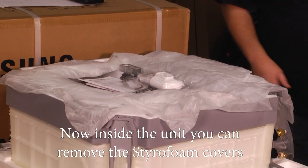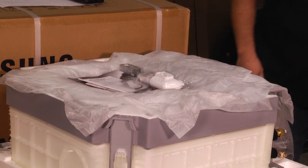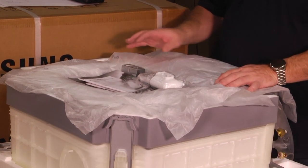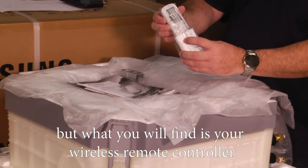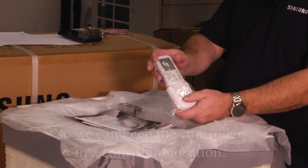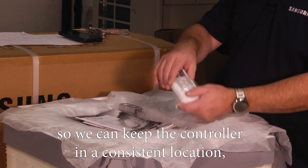Inside the unit you can remove the styrofoam covers. For the purpose of the video, we've already taken these materials out of the bag, but what you'll find is your wireless remote controller and the mounting bracket that you can mount to the wall so we can keep the controller in a consistent location.